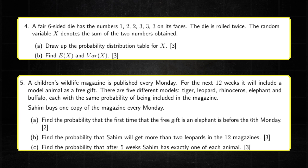Questions four and five both fall under discrete random variables. This topic consists of three subtopics: probability distribution table, binomial distribution, and geometric distribution. All these subtopics almost always appear in every paper, so that's what I was going for with these two questions.